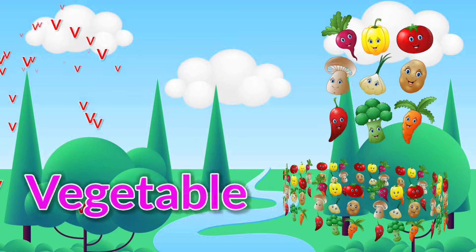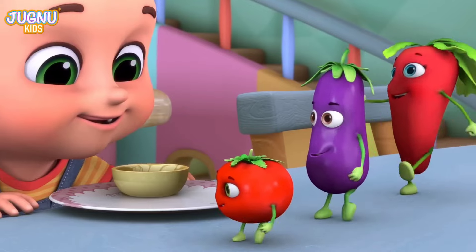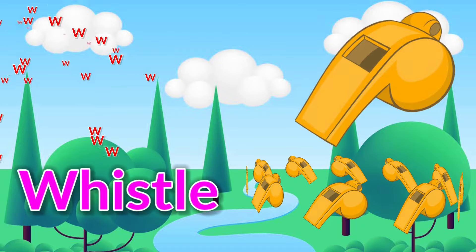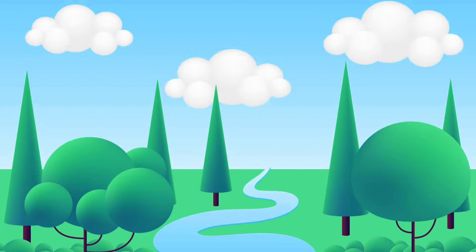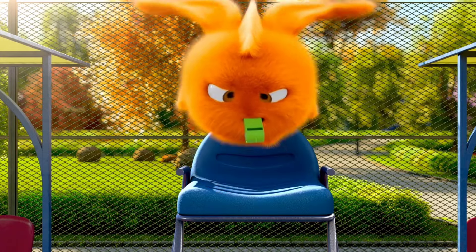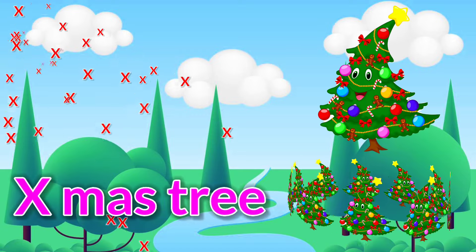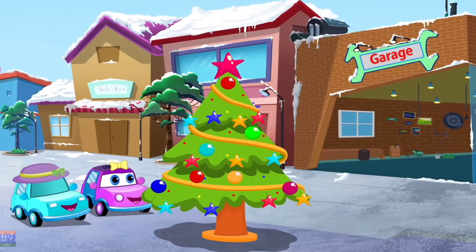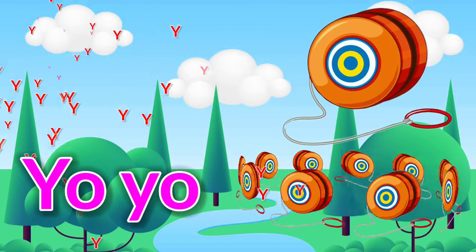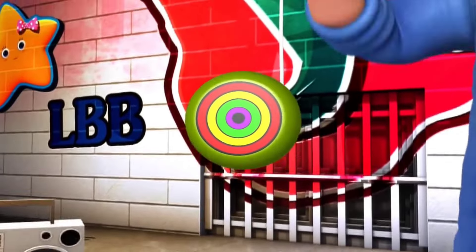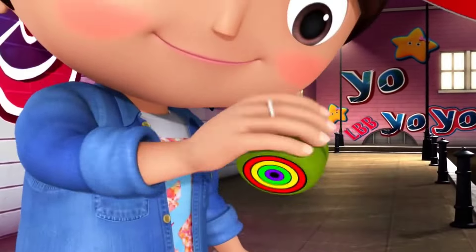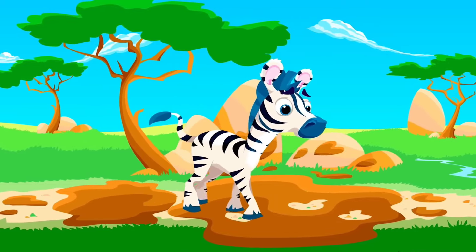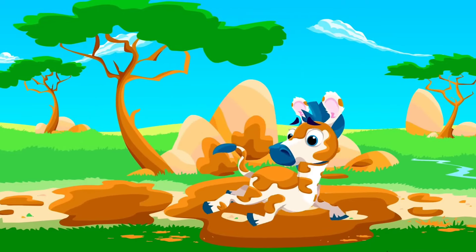V is for Vegetable. W is for Whistle. X is for Christmas Tree. Y is for Yo-Yo — let it spin, down it goes and up again. Z is for Zebra. Help me find my Z!